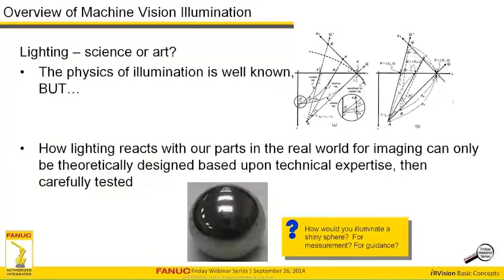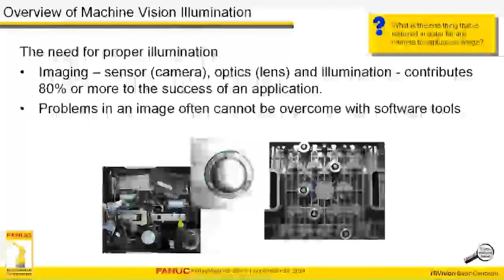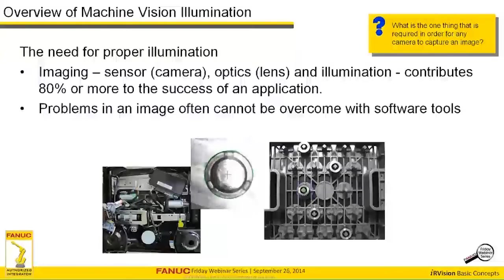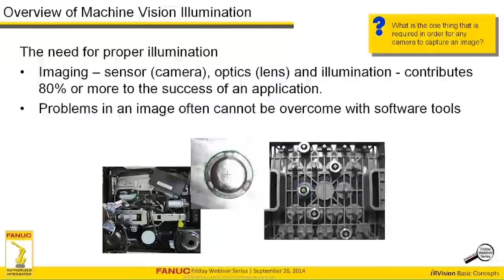There are a couple of good solutions, and I'm going to let you think about that through the course of the webinar. At the end I'll give you an answer. So why do we need proper illumination? Globally, everybody in machine vision agrees that the sensor, camera, optics, lenses, and illumination — this combination of imaging components — contributes 80% or more to the success of any application. That includes your next application.